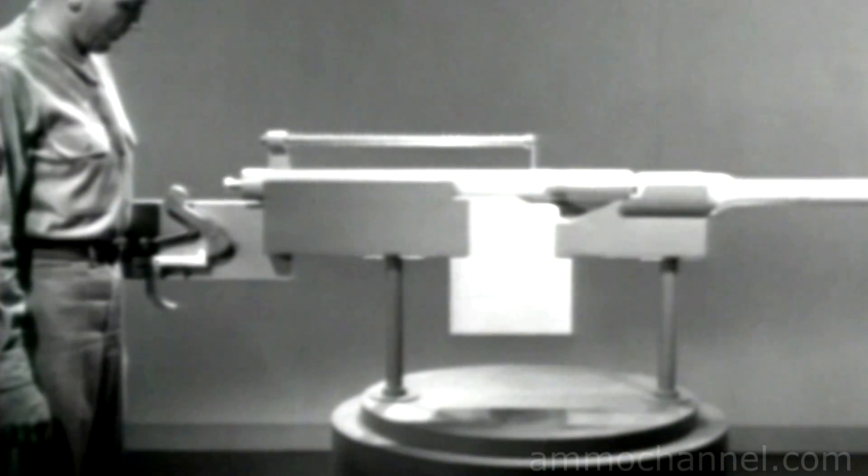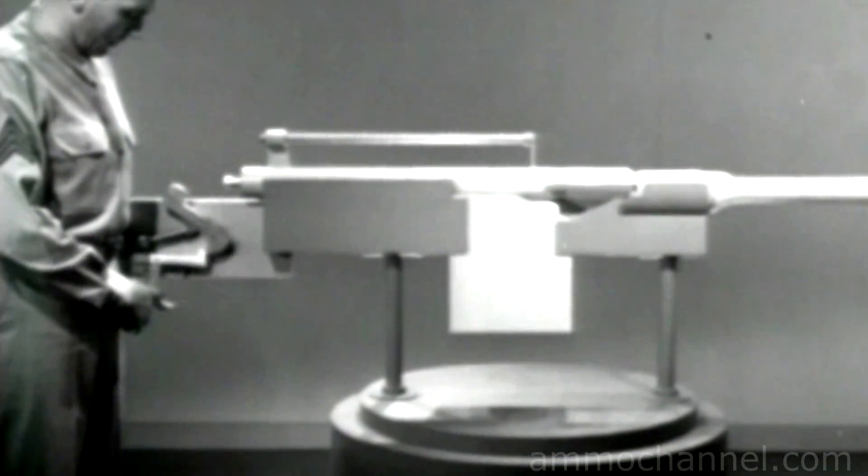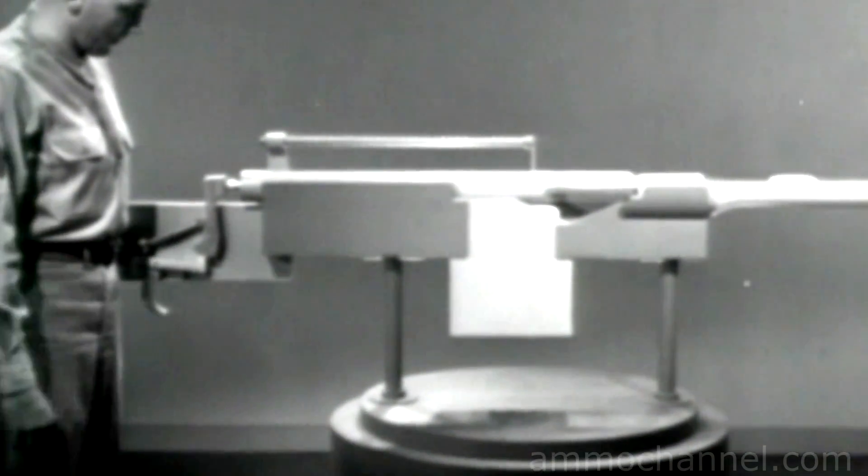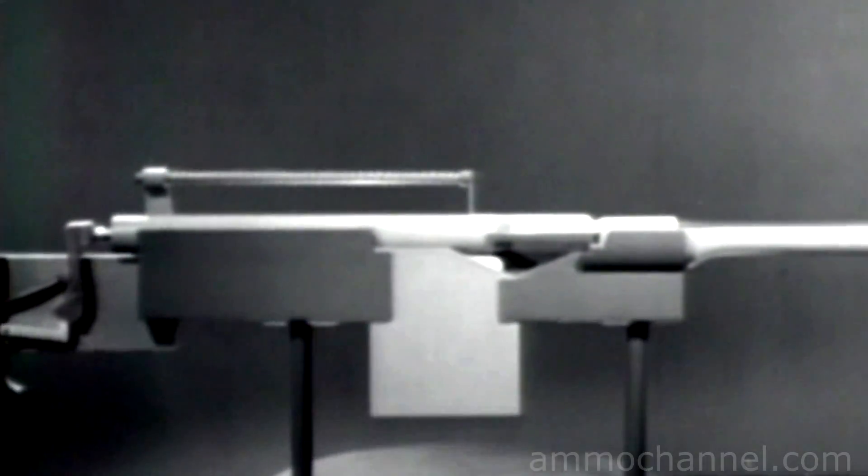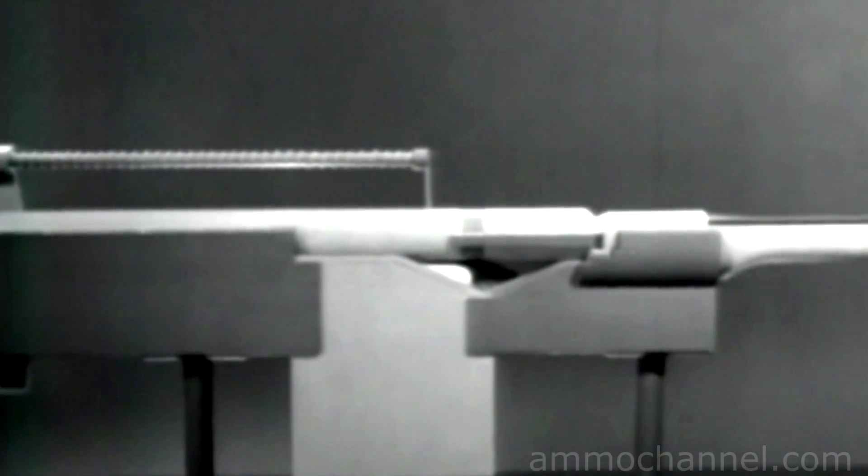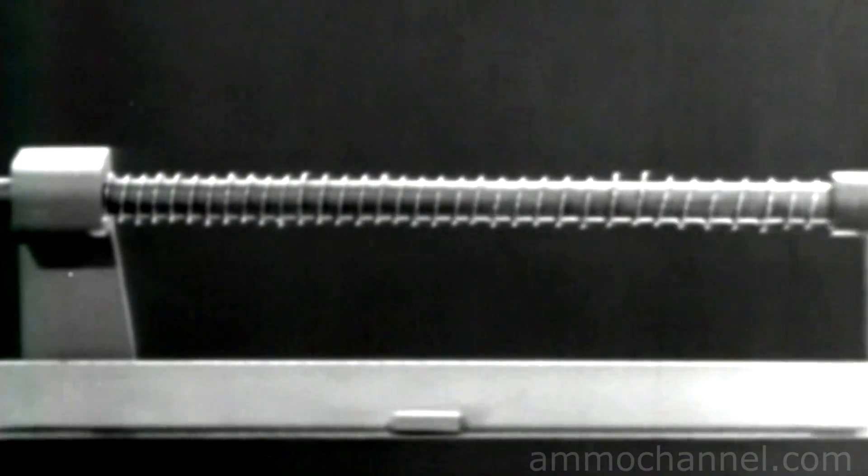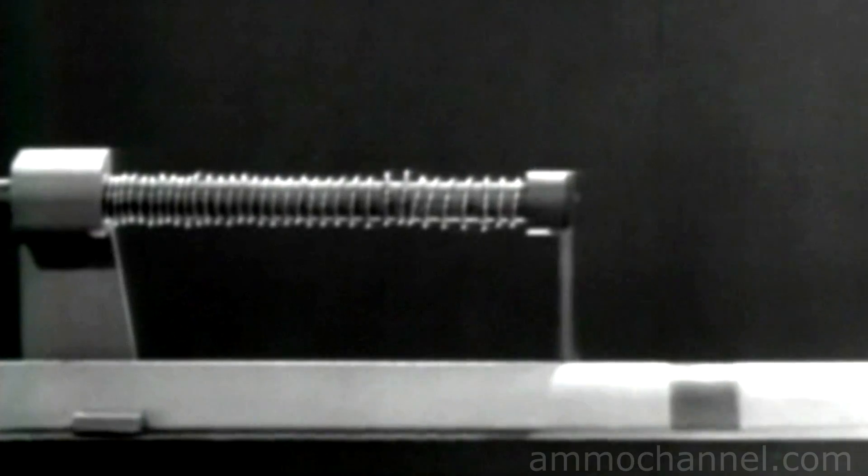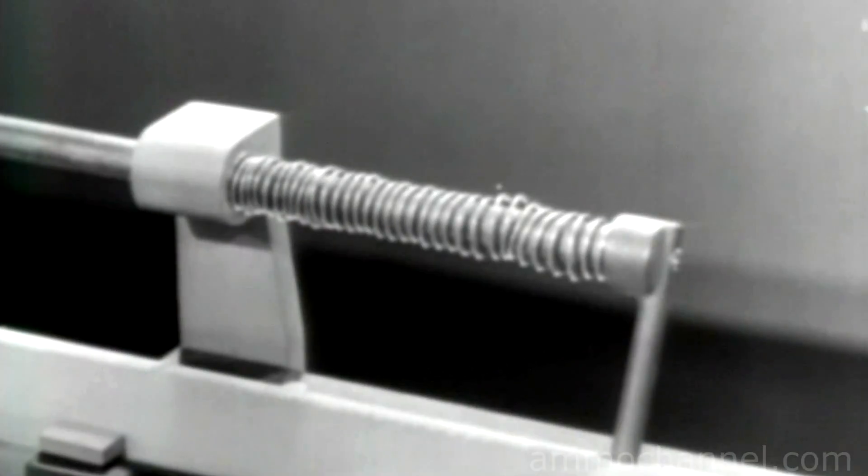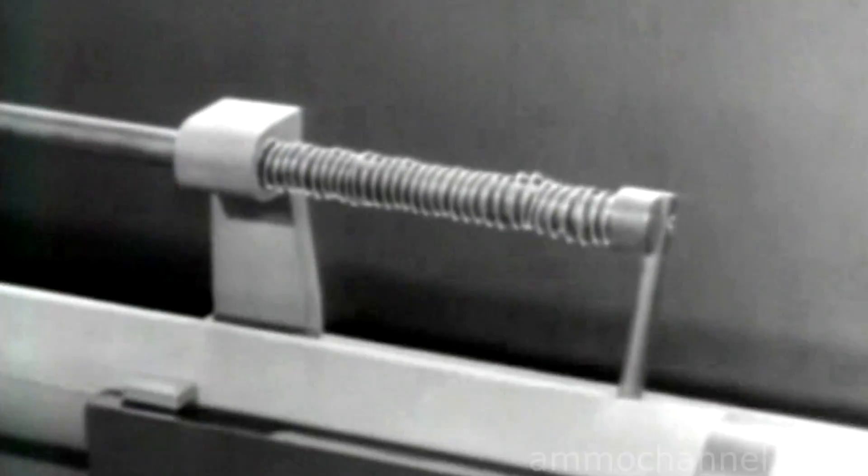Now, let's see what happens when we fire a round. The bullet leaves the barrel before the bolt opens. As the bolt opens, the return spring is compressed. Then the spring expands and closes the bolt.